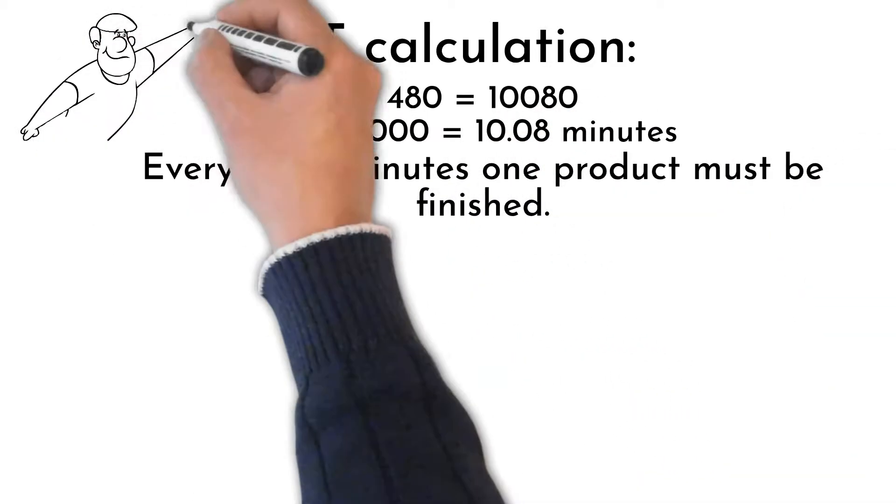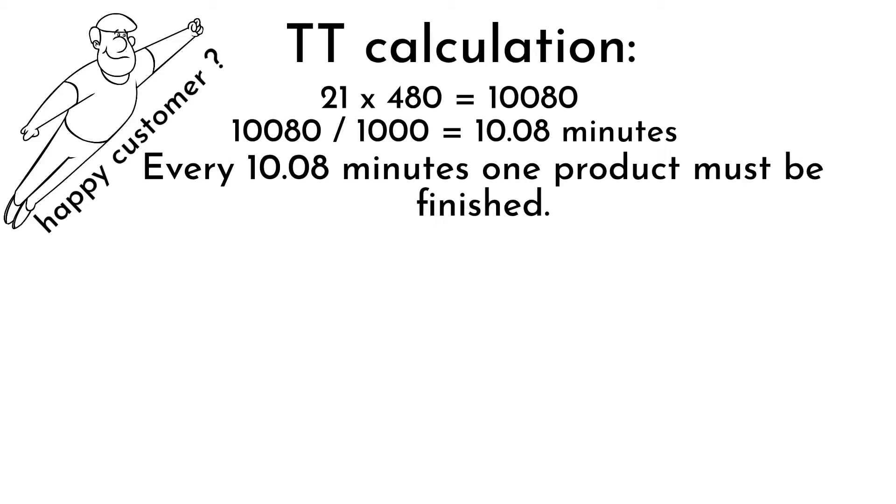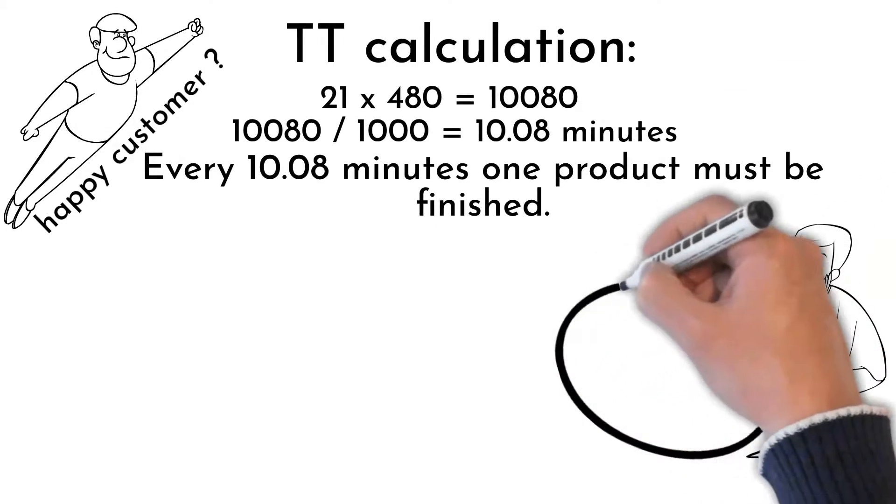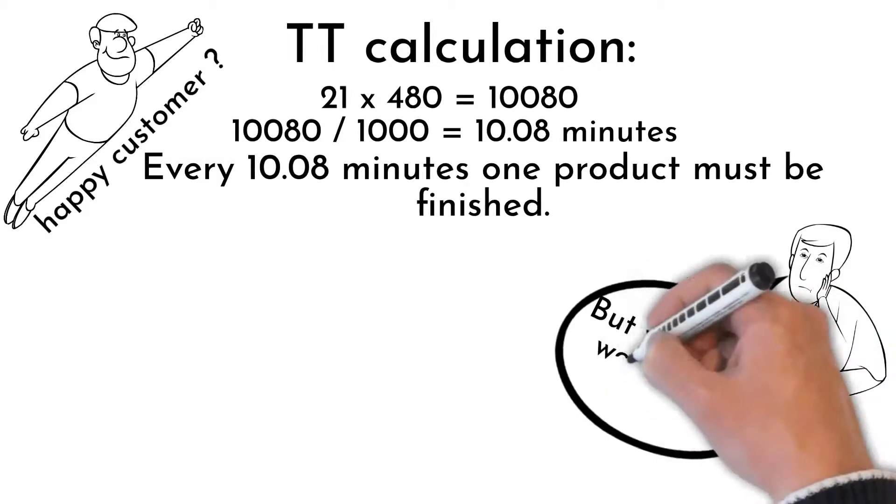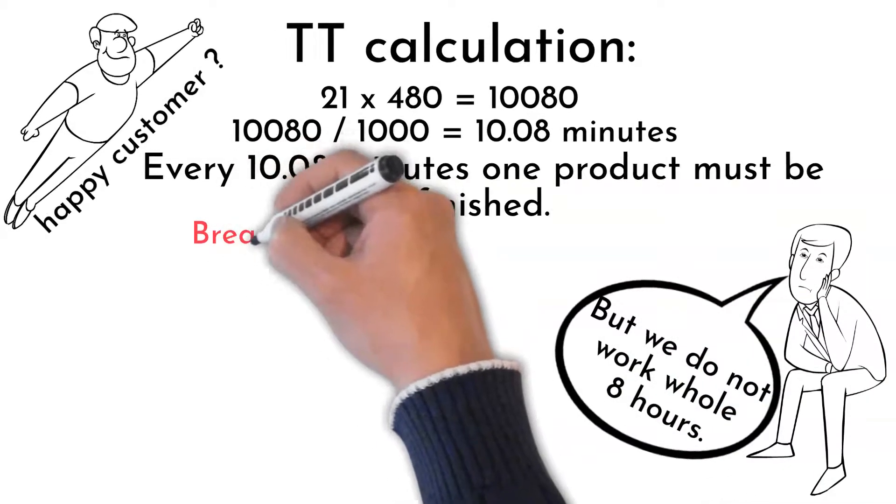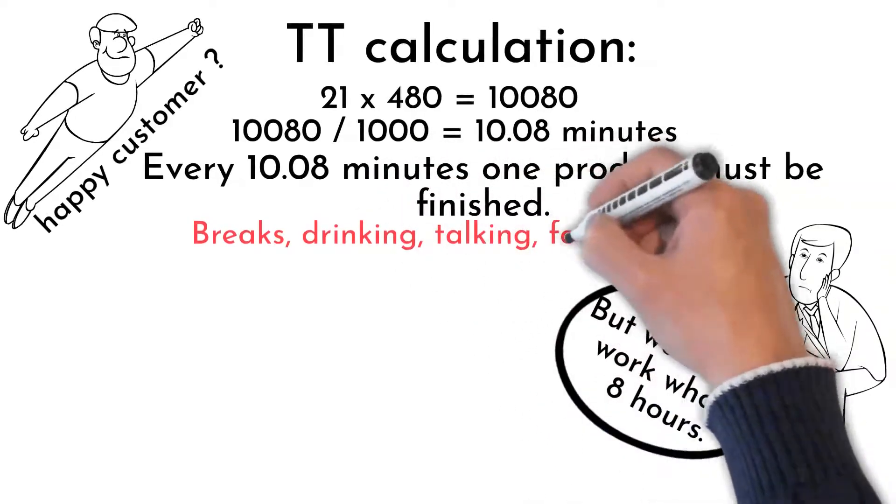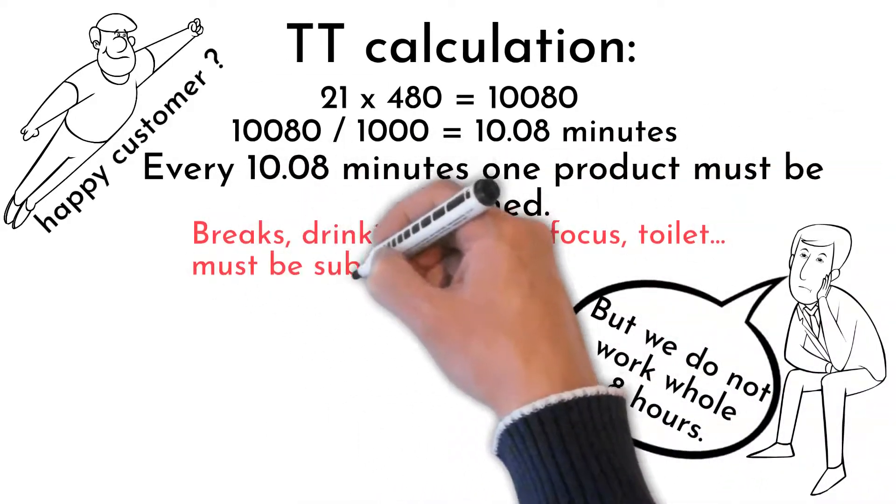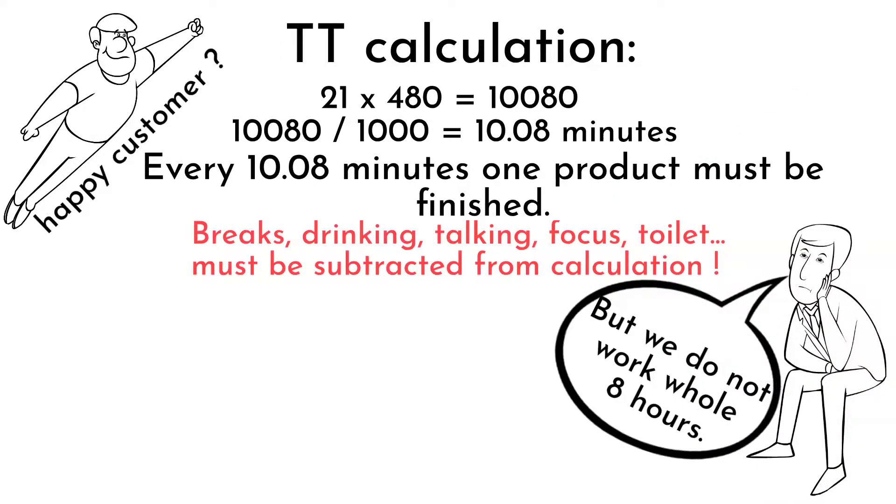In reality, nobody can work 480 minutes with 100% focus called efficiency. There are breaks and natural human needs like drinking, chatting, unstable focus. This decreases efficiency. All these have to be subtracted from our calculation.